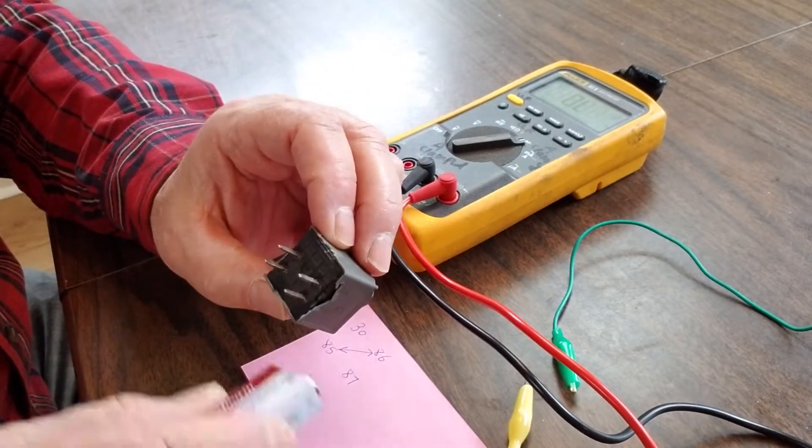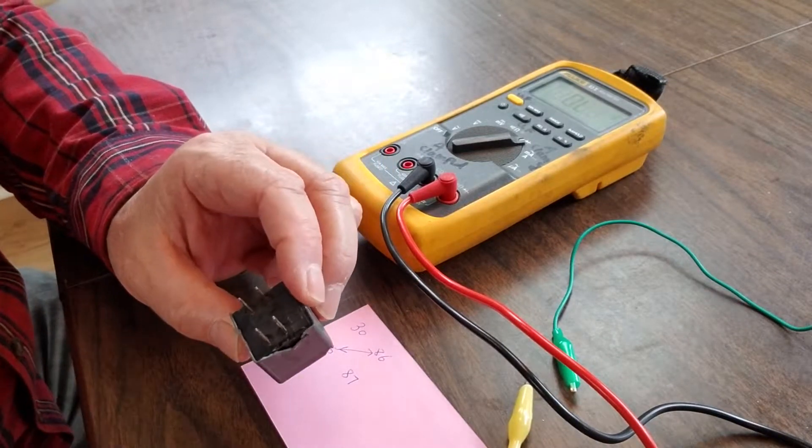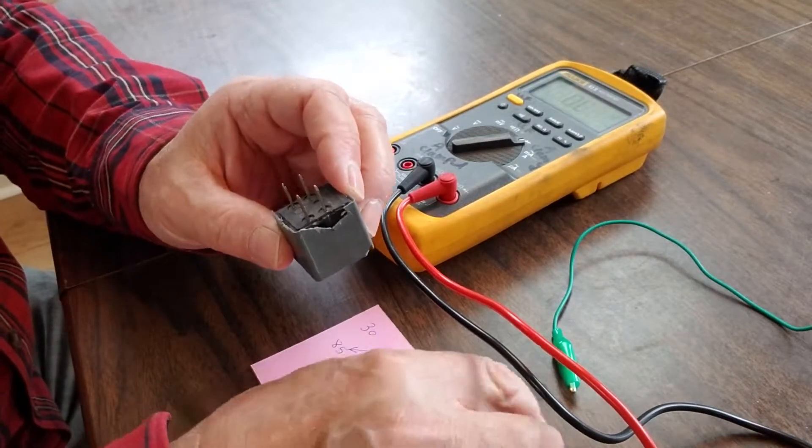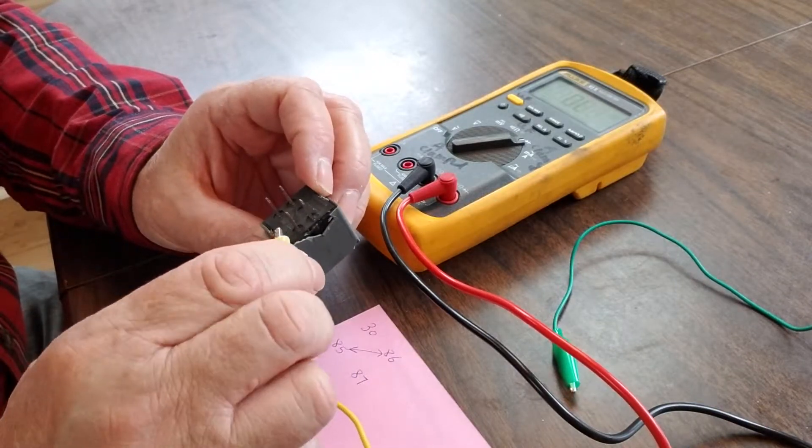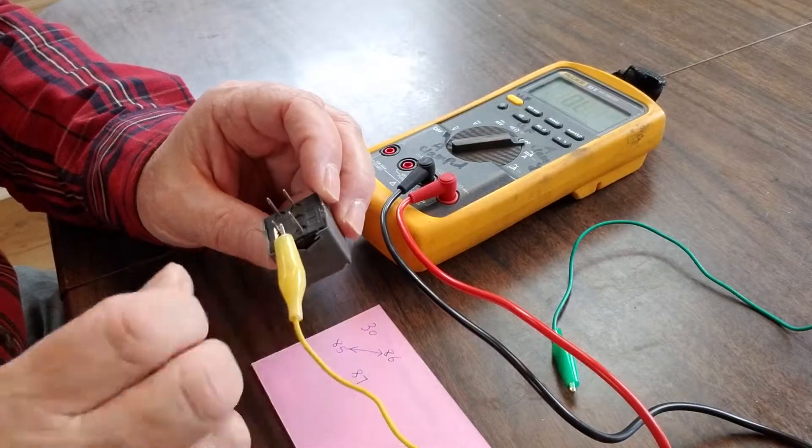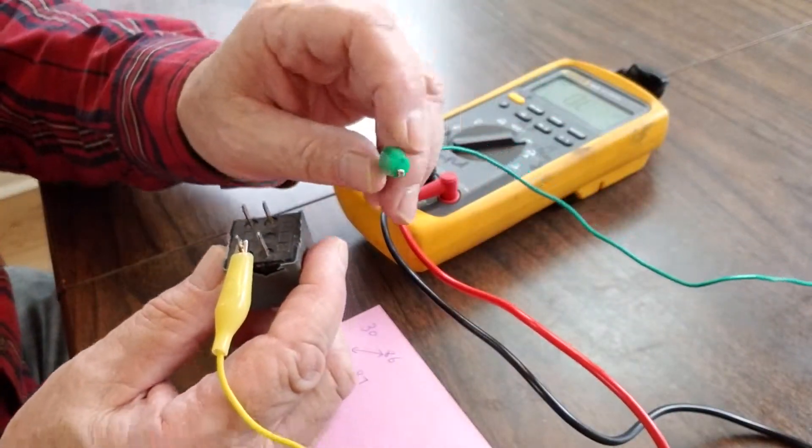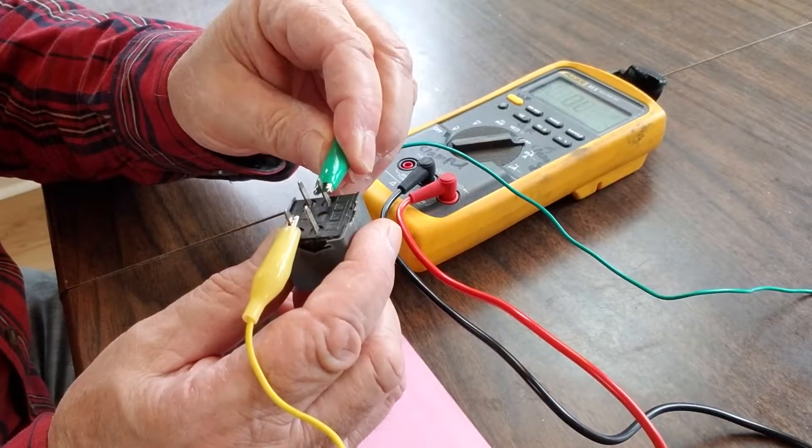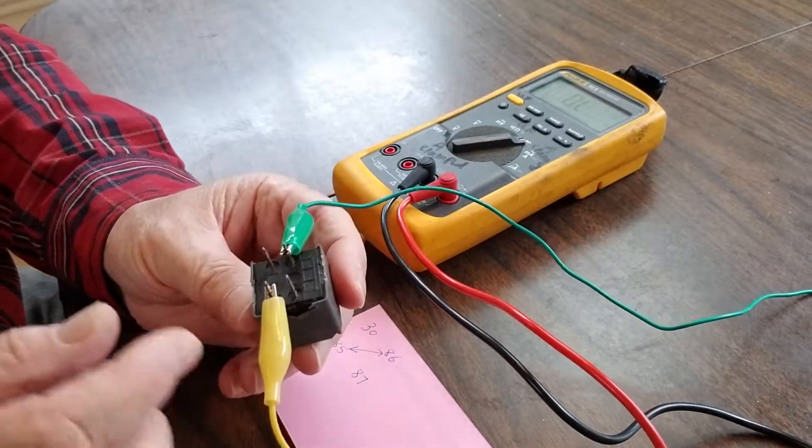If you want to check it further, you need an ohmmeter. You put it on pins 30 and 87, hook it up right here, and check for continuity.